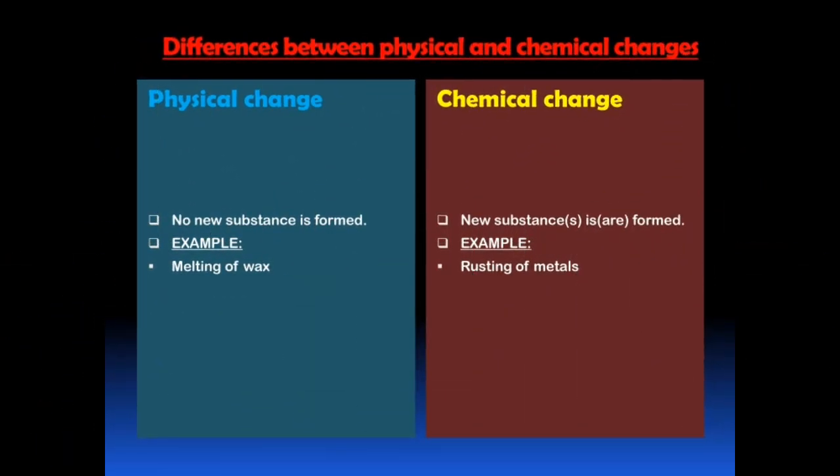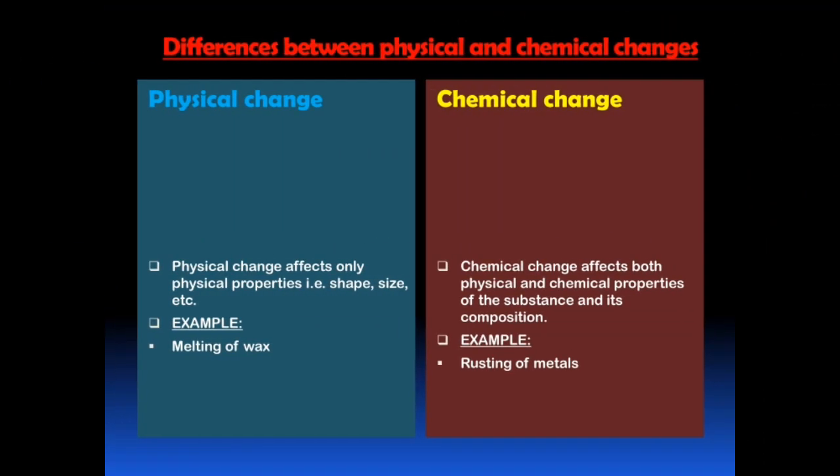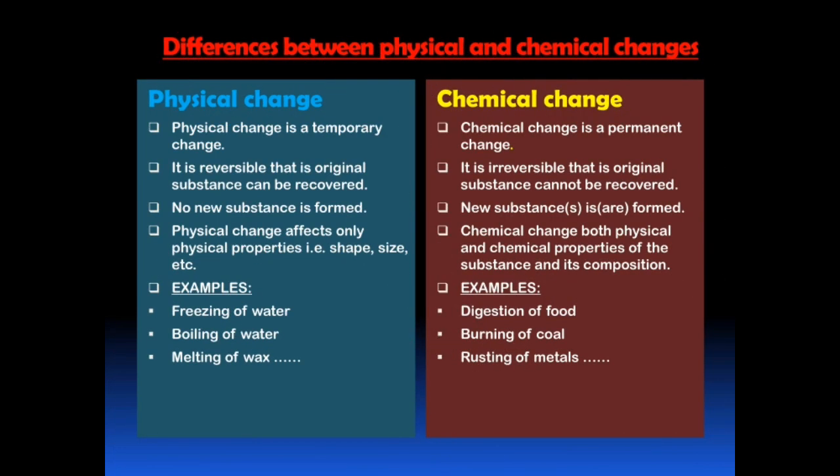The third difference: no new substance is formed during a physical change. Example: melting of wax. However, new substances are formed during a chemical change. Example: rusting of metals. The fourth difference: physical change affects only physical properties — that is, shape, size, etc. Example: melting of wax. But chemical change affects both physical and chemical properties of the substances and its composition. Example: rusting of metals. These are the major differences between a physical change and a chemical change.